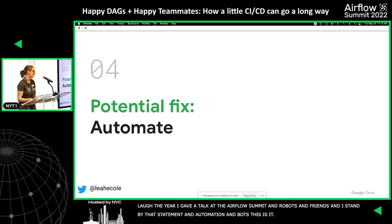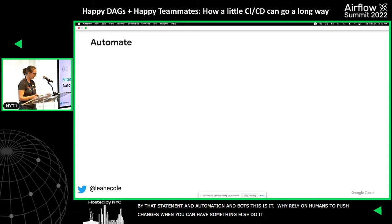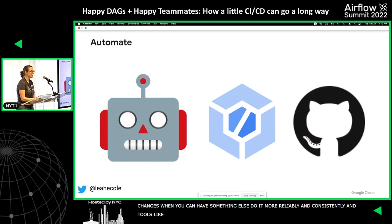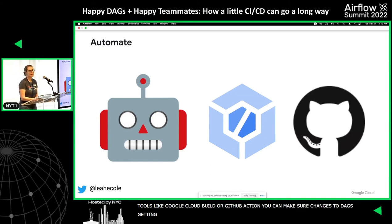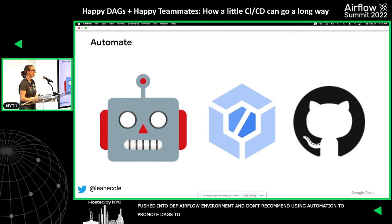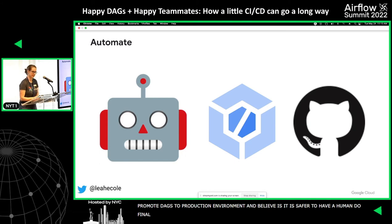Why rely on a human to push those changes when you could have something else do it more reliably and consistently? With tools like Google Cloud Build or GitHub Actions, you can make sure that as soon as changes to your DAGs get pushed to source control, or at some regular interval, those changes get pushed into your dev Airflow environment. I do not recommend using automation to promote DAGs to your production environment — I believe it's safer to have a human do the final step of validation — but that's my personal risk tolerance. Your org may feel differently, and that is awesome.